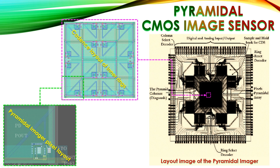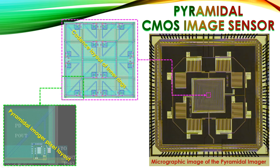This is the layout of the inner pixels of the pyramidal sensor — a single pixel layout showing the photodiode, reset transistor, amplifier transistor, and select transistor. The micrographic image of the real pyramidal image sensor shows the sample-and-hold structure. It is called pyramidal because if you look at it from the top, it resembles a pyramid viewed from above.